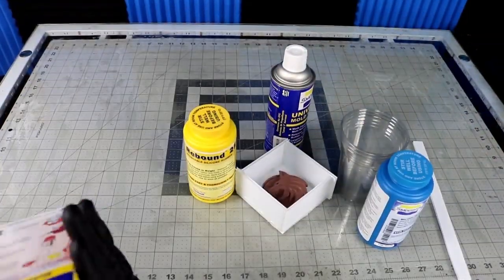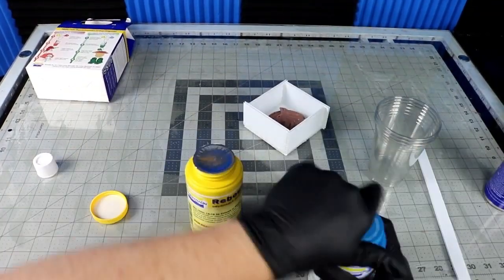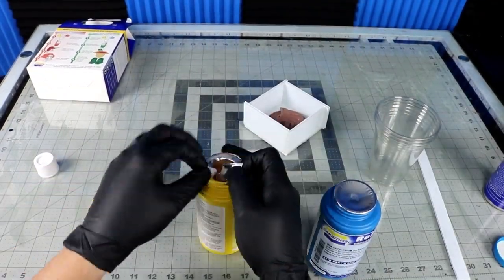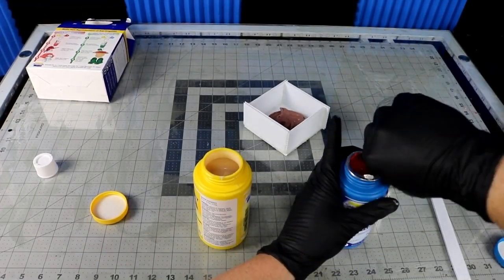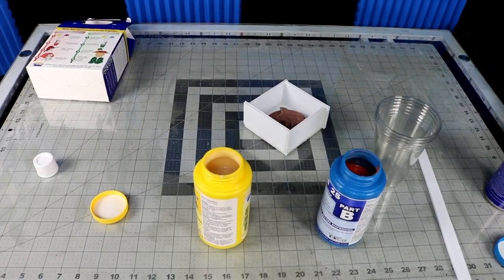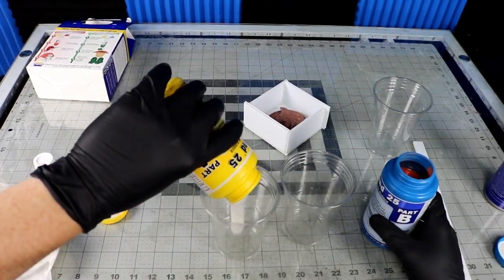I used a Rebound 25 brush-on kit that I had from Smooth-On laying around. I realized that it's intended for brush-on molding, but I didn't have any other mix like what I've used in previous molding videos. I figured because it wasn't a very deep pour, it probably would work okay.